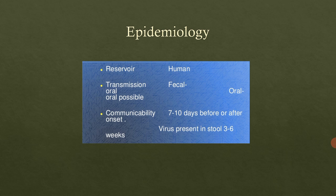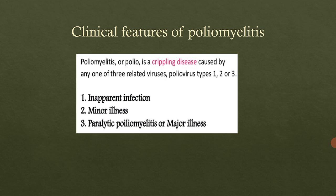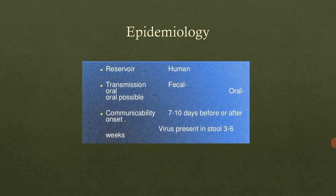The infection of the poliovirus is mostly asymptomatic, and the ratio of subclinical to clinical infections can be stated as 100 to 1, or even 1000 to 1 for subclinical to clinical infections.